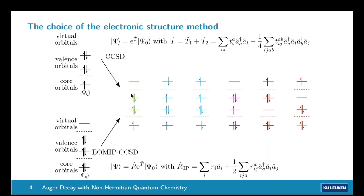The FANO EOM-CCSD approach computes partial decay widths as a matrix element between the outgoing electron wave function and the bound states. The difference with our approach is that ours is more black-box: we only need to define the complex basis functions, which can be easily determined a priori for each system, and then we get all decay channels automatically without needing to pre-specify them.